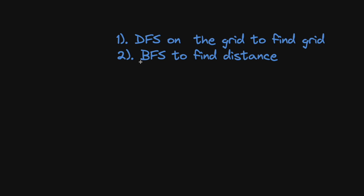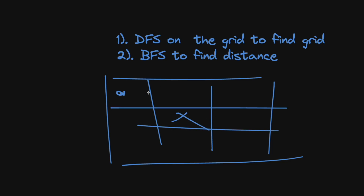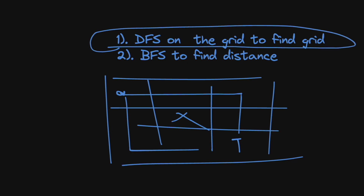So that's really the approach we want to do. We're going to start at some point and discover the rest of the grid — discover where the boundaries are, if there are any obstacles, and find the target. Then once we know what the grid is, we can just BFS to find the shortest possible route. The DFS is the harder part; the BFS is easy. So we just need to figure out the grid — that's really the crux of this problem. Let's go to the code editor and type this up.